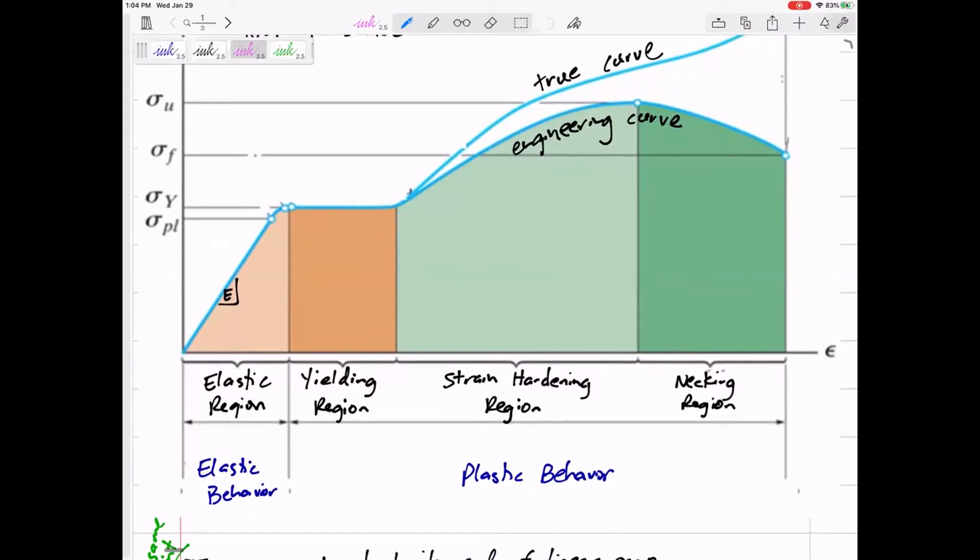Yeah, I know. The main things—here's the main thing—maybe on that page, if you have a highlighter or circle, the main things. The slope of the elastic region is E, the modulus of elasticity, also called the elastic modulus, also called Young's modulus.